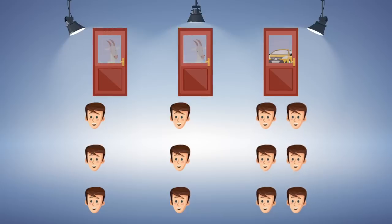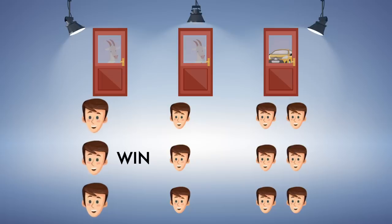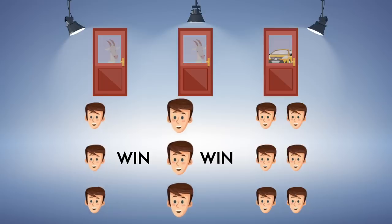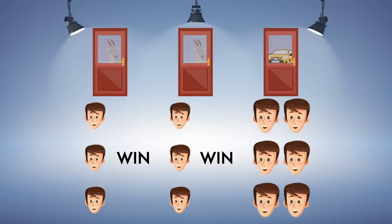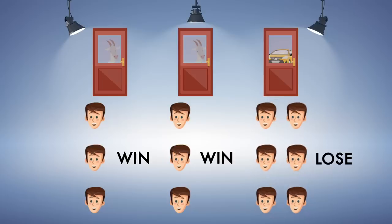So here are all the people that are now looking at a goat, faced with a choice to switch. If everyone switches, then the people that originally chose door 1 will win the car, since door 2 was revealed to them, and they'd switch to 3. Those that originally chose door 2 will also win for the same reason. But those that chose door 3 will lose. So of the 12 people here, 6 will win, and 6 will lose, or 50-50.